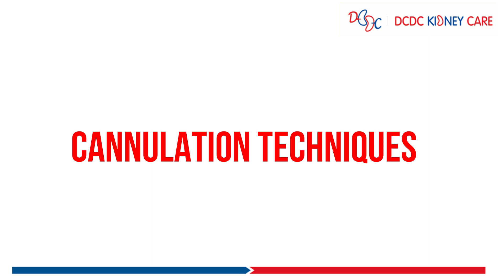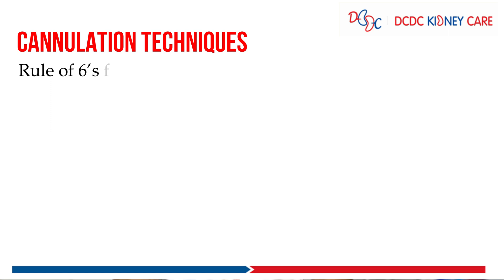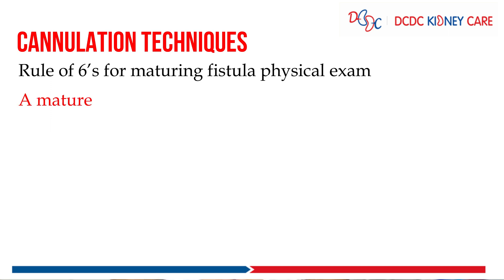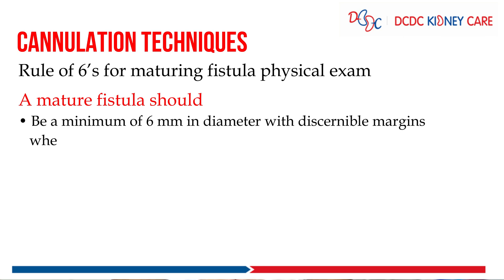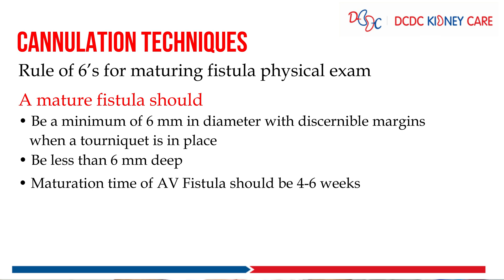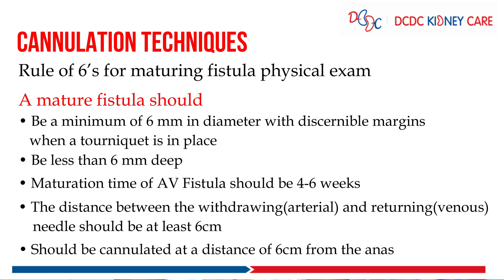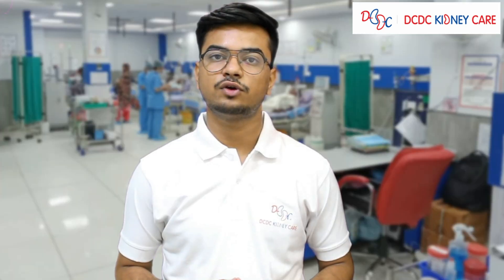Coming to the cannulation part, the rule of six is followed for the cannulation of AV fistula. This suggests that ideally the fistula should be situated at 6 mm deep, the diameter of the AV fistula after creation should be 6 mm, the maturation time should be 4 to 6 weeks, the distance between the arterial and the venous needle should be 6 cm, and the fistula should be cannulated at a distance of 6 cm from the anastomosis.